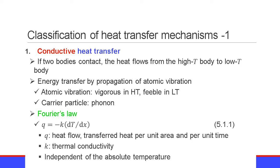The first one is conductive heat transfer. If two bodies are in contact, the heat flows from the high-temperature body to the low-temperature body. In this mechanism, the heat is transferred by propagation of atomic vibration. The atomic vibration is vigorous in the high-temperature body and feeble in the low-temperature body. The vigorous atomic vibration in the high-temperature body excites the atomic vibration in the low-temperature body. The carrier particle of heat is the phonon in conductive heat transfer.